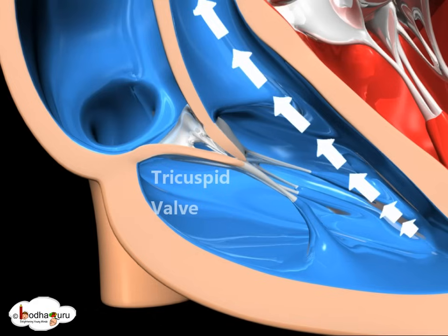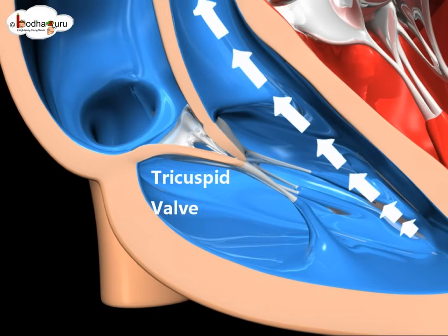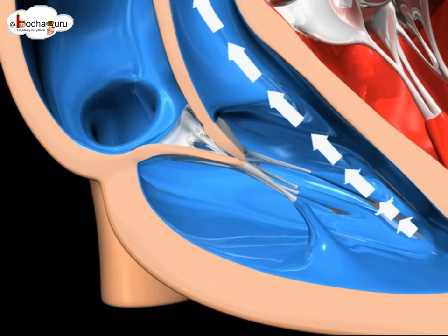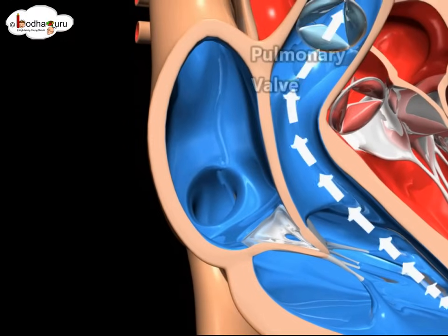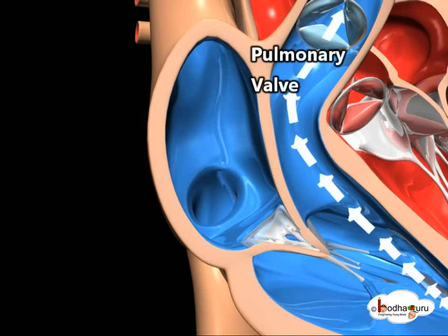When the ventricles are full, the tricuspid valve shuts. Blood leaves the right ventricle through the pulmonary valve into the pulmonary artery for oxygenation.